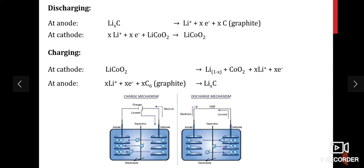The anode consists of graphite sheets with lithium ions intercalated between them. The anode and cathode are separated by a thin membrane. The electrolyte is lithium hexafluorophosphate or lithium perchlorate. The charging and discharging mechanism and reactions are shown in this slide.